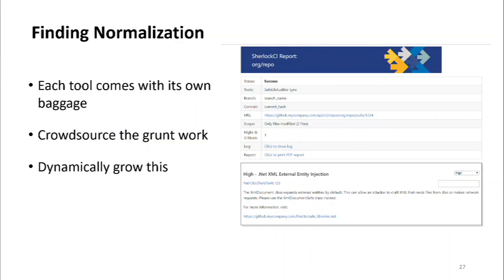Finding normalization is important when you're using multiple tools — you get findings from different tools in different formats. Some tools are amazing at descriptions, some are not. I literally had a tool where the finding name was 'XSS' and the description was 'Cross-site scripting.' I appreciate the simplicity, but a more detailed description that actually helps developers fix the issue would be much more useful.